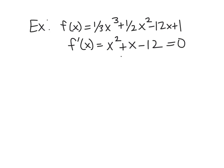We set that equal to zero. So then we're going to want to factor. And so this is going to be x plus 4 times x minus 3. And so our critical values are negative 4 and 3.